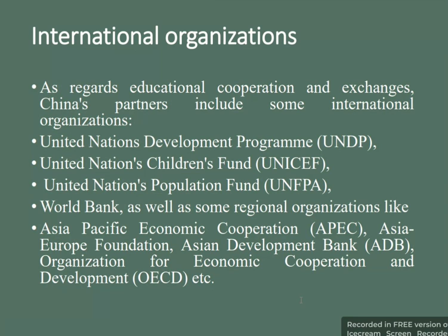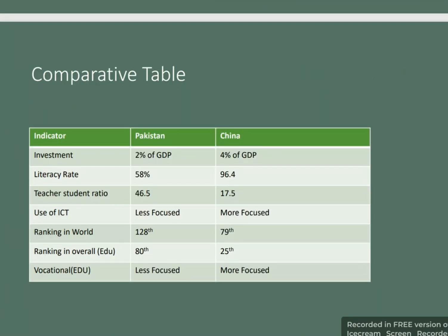A comparative table of indicators for Pakistan and China shows: investment in education is 2% of GDP in Pakistan vs. 4% in China; literacy rate is 58% in Pakistan vs. 96.4% in China; teacher-to-student ratio is 46.5 in Pakistan vs. 17.5 in China; use of ICT is less focused in Pakistan vs. more focused in China; world ranking is 128th for Pakistan vs. 79th for China; overall education ranking is 80th for Pakistan vs. 25th for China; and vocational education is less focused in Pakistan but more focused in China.